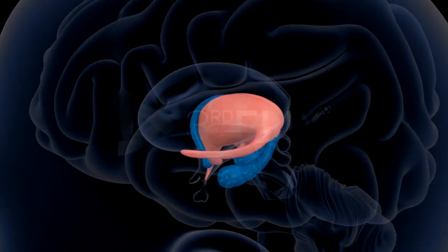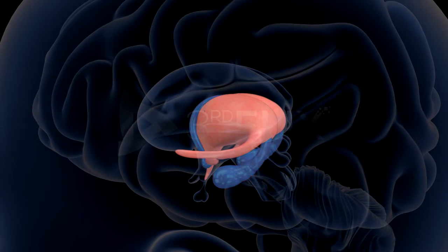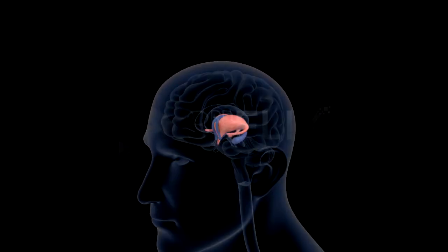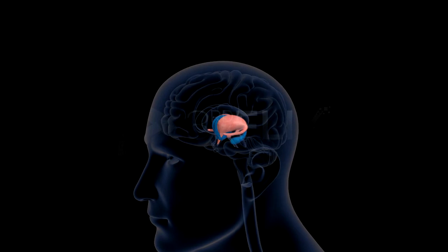Hippocampus is the swollen, seahorse-like lower lip of the limbic system. It converts short-term memory into long-term memory.